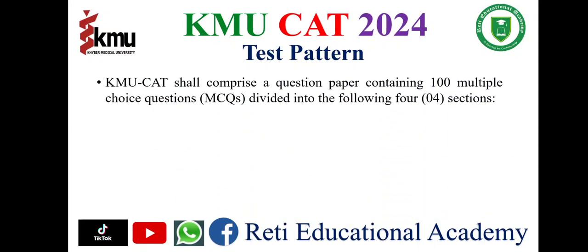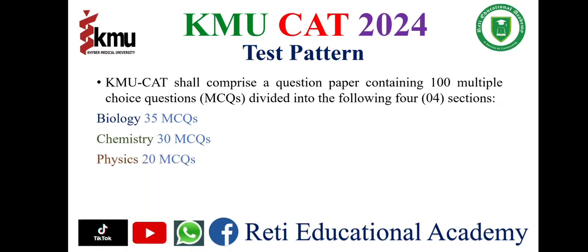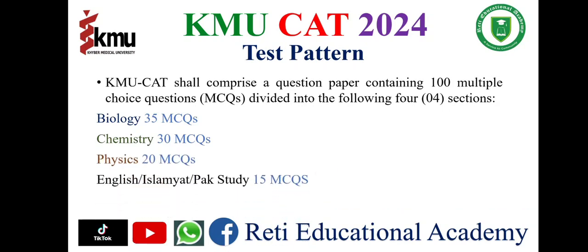KMUCAT shall comprise a question paper containing 100 multiple choice questions divided into the following four sections: Biology – 35 MCQs, Chemistry – 30 MCQs, Physics – 20 MCQs, and English, Islamiyat and Pakistani Studies – 15 MCQs, 5 each.